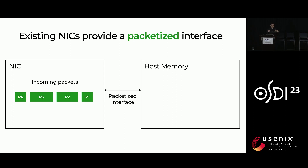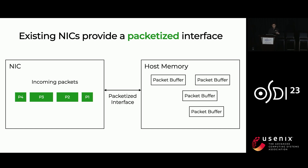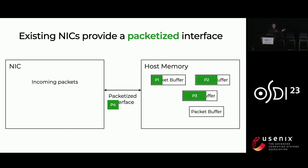So let's start by looking at how the existing NIC interface works. At a high level, the existing NIC interface is a packetized interface. What I mean by this is that for every packet that we receive, we're going to dedicate an individual packet buffer with a fixed size. So for every packet that comes, the NIC will send each one to their own dedicated buffer.